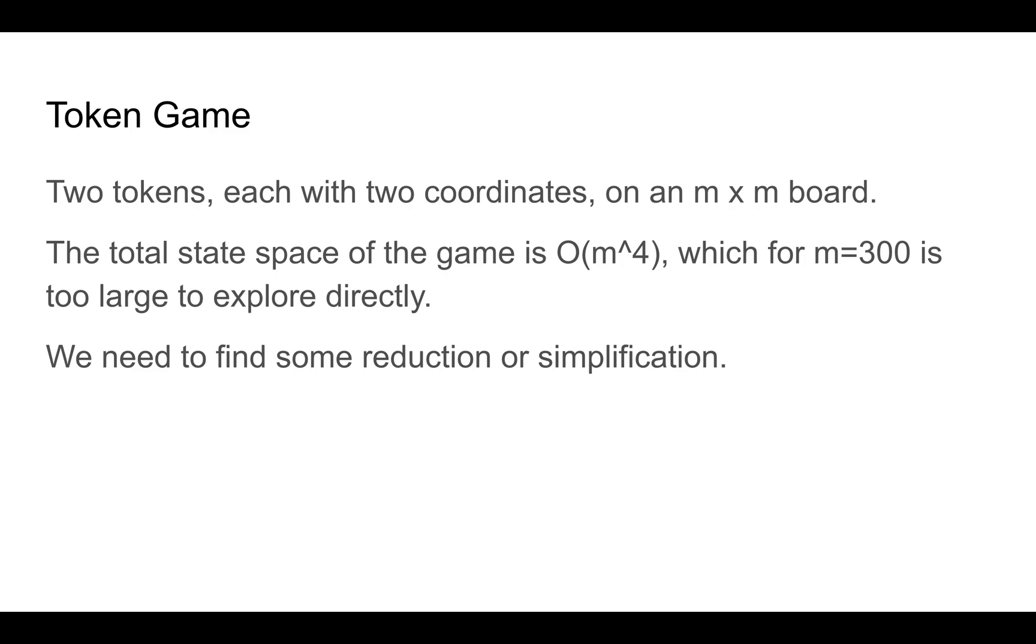So two tokens, two coordinates each on an M by M board, that's four integers of up to M, so the state space of this game is O(m^4). At m equals 300, that's too large for us to explore directly, which means we need to think about this game a little bit and see if we can find some simplification that allows us to analyze it.